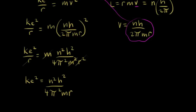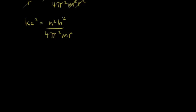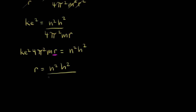The goal is to solve for the radius of that circle. To solve for R, we multiply both sides by four pi squared M R, getting K E squared times four pi squared M R on the left, and N squared H squared on the right. Solving for R, we get R equals N squared H squared over K E squared times four pi squared M.